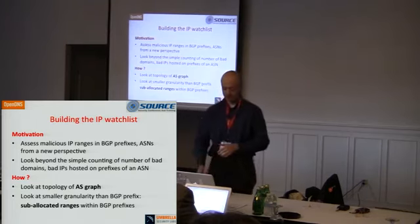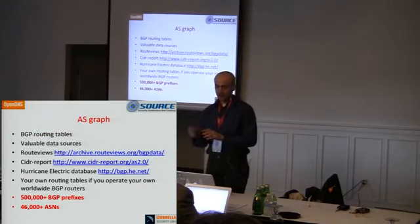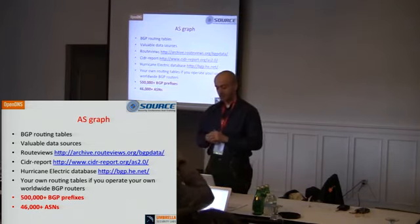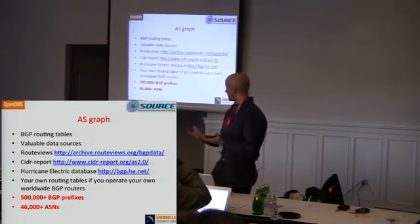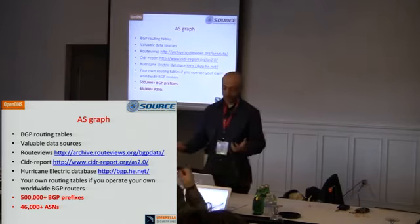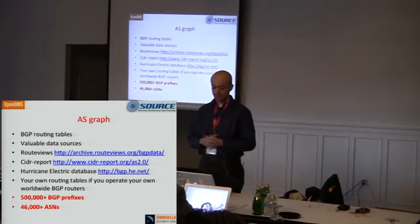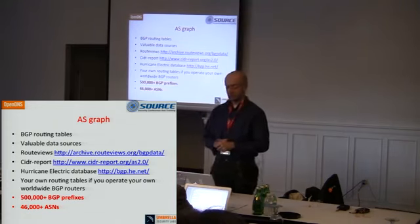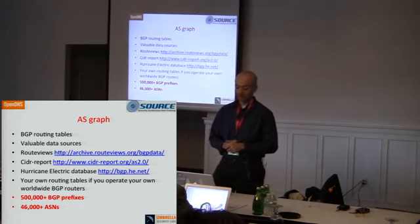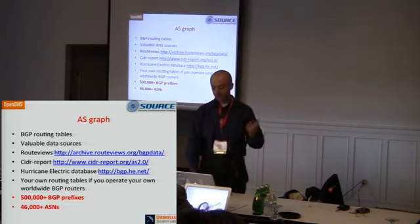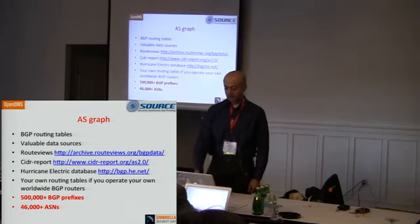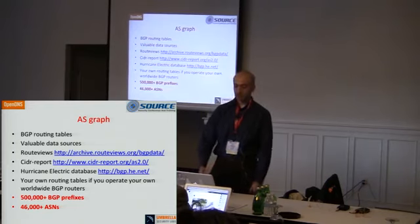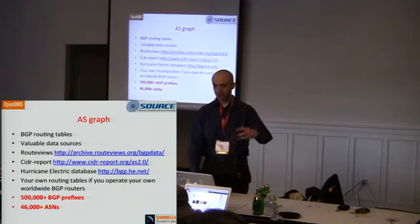Oftentimes you'll see reserved ranges much smaller than a /24 — like /29, /28, /30 — just a few IPs reserved by rogue or suspicious customers that are later used to deliver attacks. To build the ASN graph, you start from BGP routing tables. There are valuable data sources: the Route Views site where you can download daily dumps, the CIDA report site, and Hurricane Electric, which has a very useful website with a lot of information. Currently there are around 500,000 BGP prefixes and 46,000 ASNs.